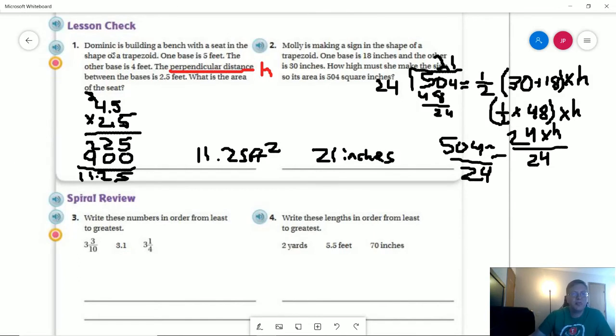Sorry about that. So number one, the joys of using technology. We are building a bench with a seat in the shape of a trapezoid. One base is 5 feet, the other base is 4 feet, giving us a total of 9 feet. We multiply that by 1 half to get 4.5. Perpendicular distance is a fancy way of saying our height, which is 2.5. So we multiply 4.5 by 2.5, and we get 11.25 square feet.